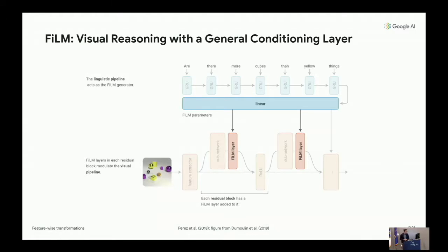At this point, let's go over a few example applications. The goal is to help you recognize applications of feature-wise transformations in the literature — they come with many different names. The first example is the visual reasoning paper in which we proposed the FILM nomenclature. FILM layers are inserted in the residual blocks of the network.